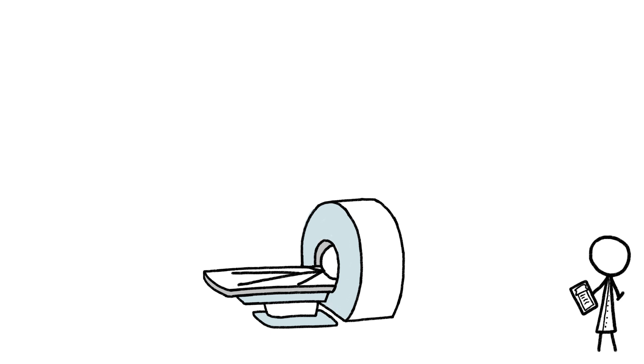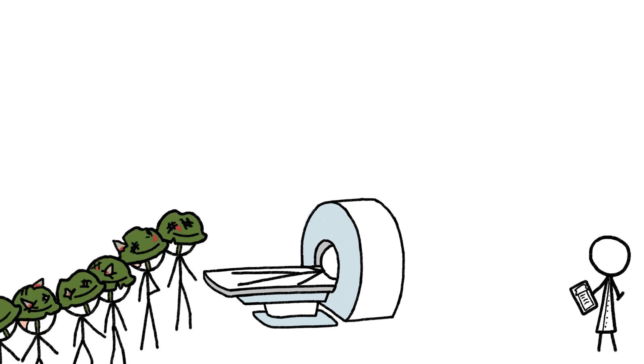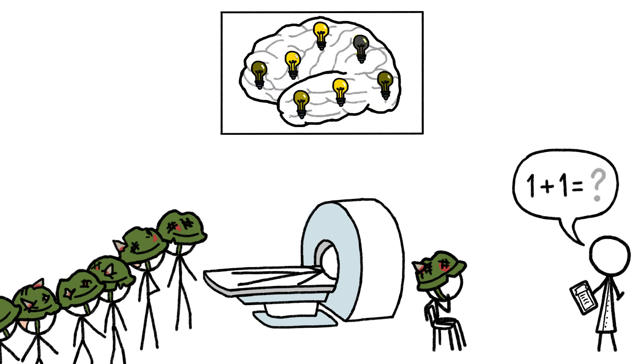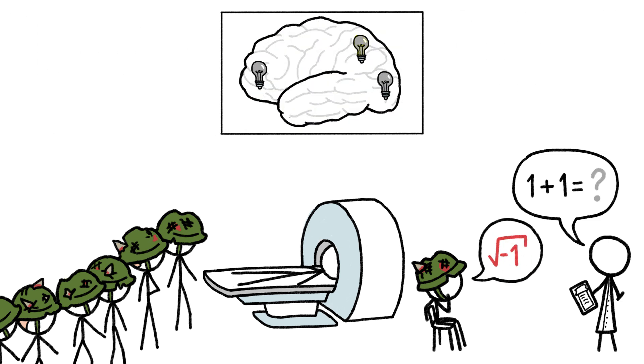Recently, researchers performed scans on 182 people with brain lesions, mostly soldiers with shrapnel wounds, and had them perform a battery of mental tasks. Then, they put all the scans together to see which brain parts were always active when the subjects could perform a task, and which parts were always turned off when they could not.